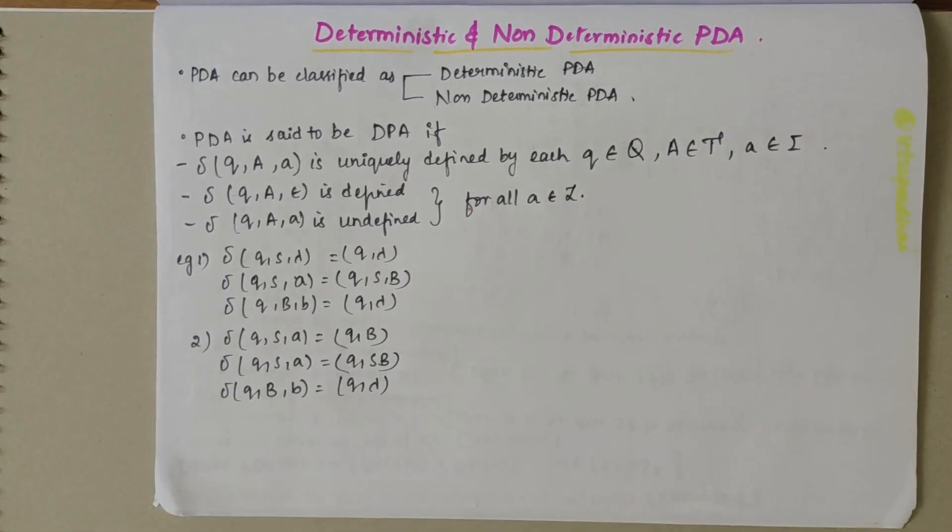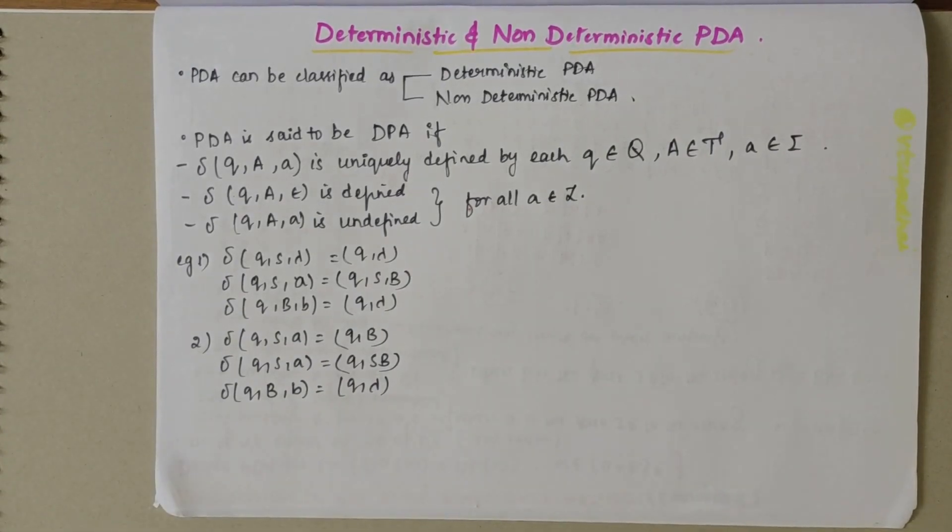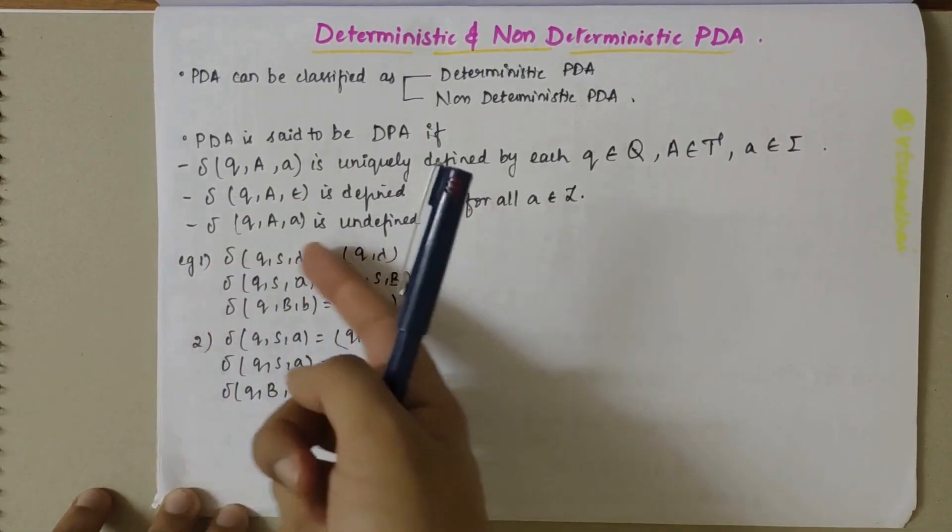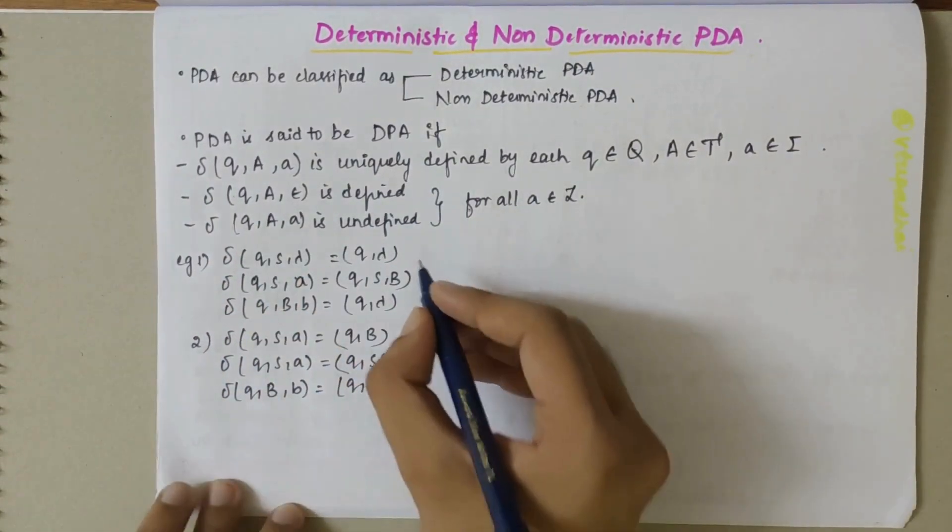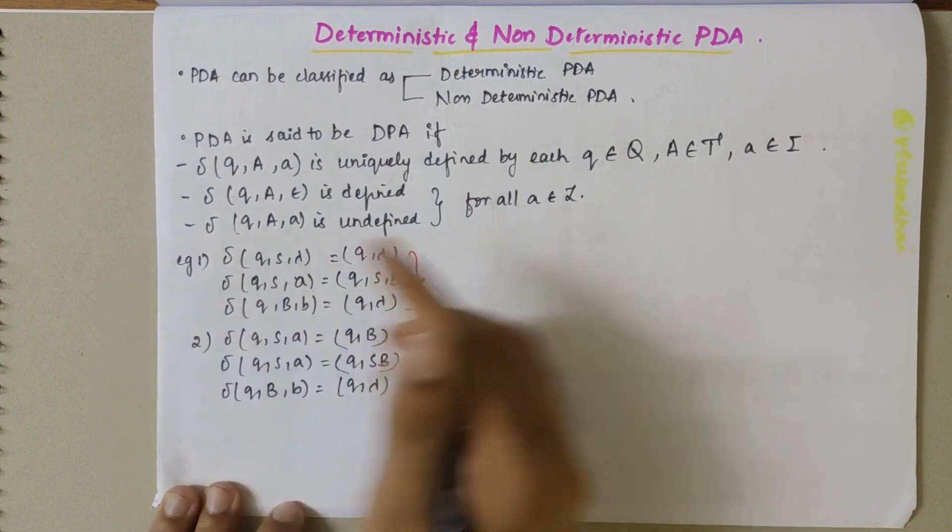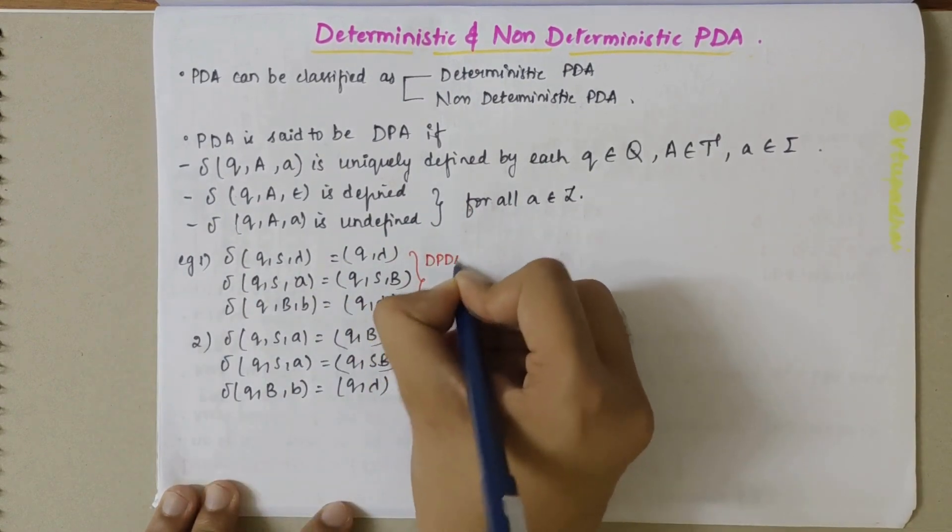If you look at the first example they are uniquely defined, right? Transition of Q, S and Lambda is not the same in any of the transitions here, so we can say that this particular example is deterministic PDA.